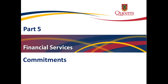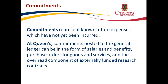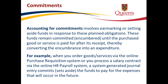Part 5: Commitments. Commitments represent known future expenses which have not yet been incurred. At Queen's, commitments posted to the General Ledger can be in the form of salaries and benefits, purchase orders for goods and services, and the overhead component of externally funded research contracts. Accounting for commitments involves earmarking funds in response to planned obligations. These funds remain committed or encumbered until the purchased good or service is paid for, thereby converting the encumbrance into an expenditure. For example, when you order goods via the online purchase requisition system or process a salary contract through the online HR payroll system, a system-generated journal entry commits funds for future expenses.